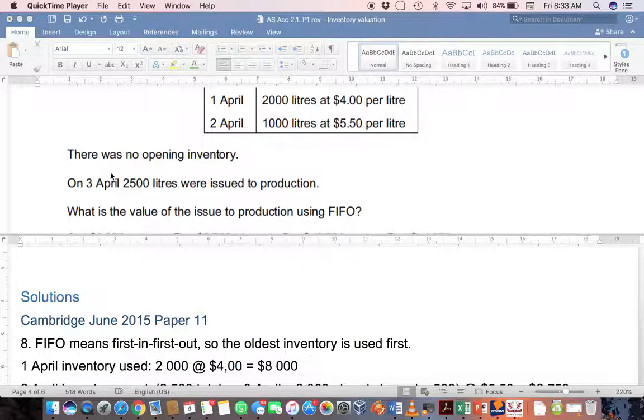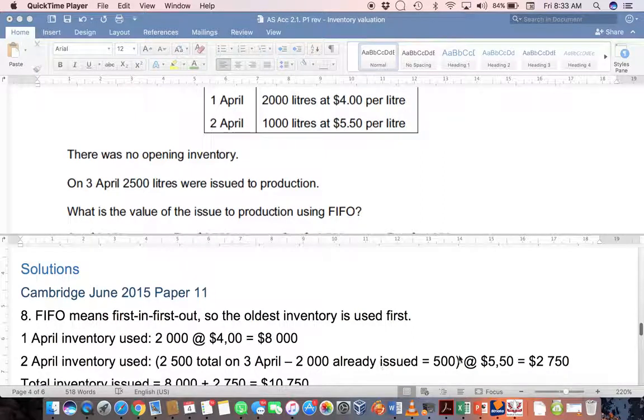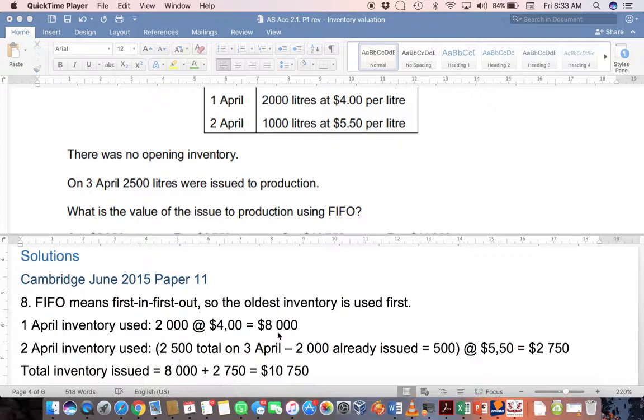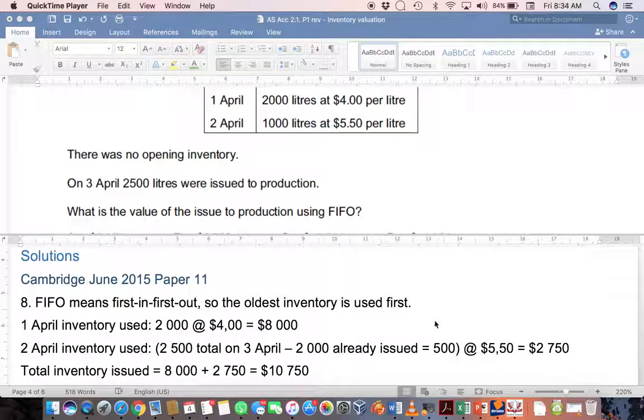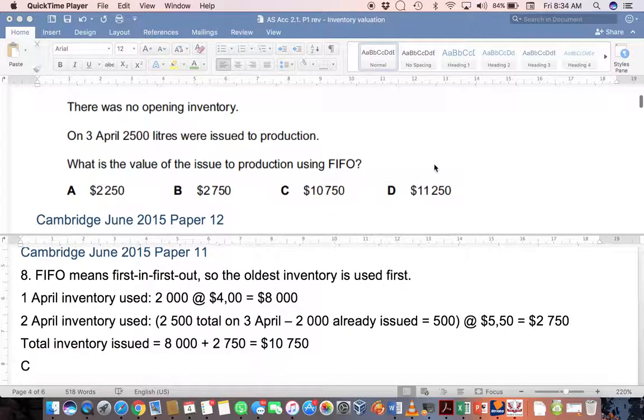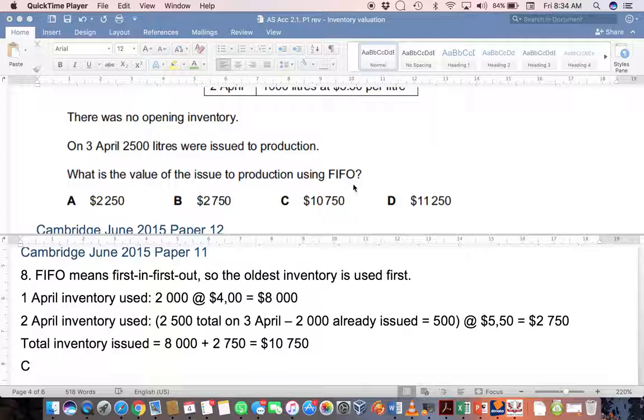However, there's a total of 2,500 not just 2,000, so that remaining 500 litres we need to get from the 2nd of April. Even though we bought a full thousand litres here, 500 litres are left over and the other 500 were issued. So we take 500 litres issued at $5.50 to get $2,750, and we can add those two figures together. $8,000 from April 1st and $2,750 from April 2nd gives a total value of $10,750. If you look at the options available, it's option C.